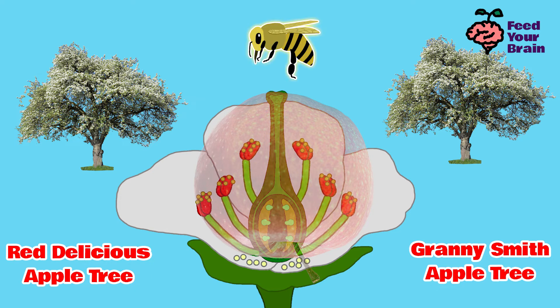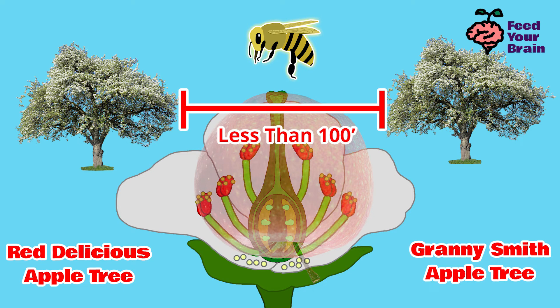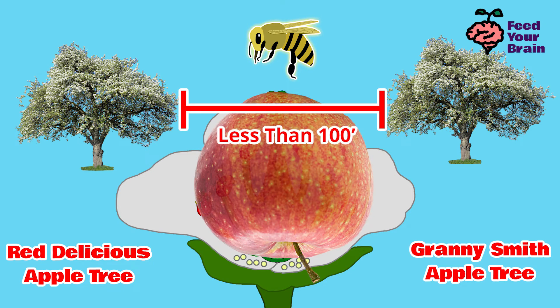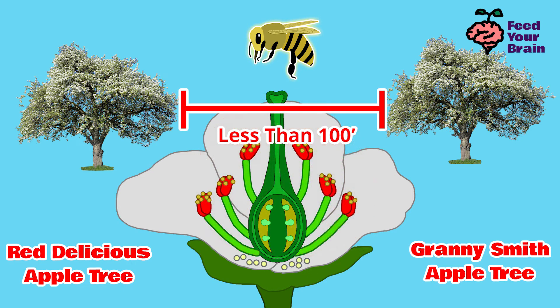Without a pollinator such as a honeybee, and without another type of apple tree within 100 feet, this apple would not have become an apple at all.